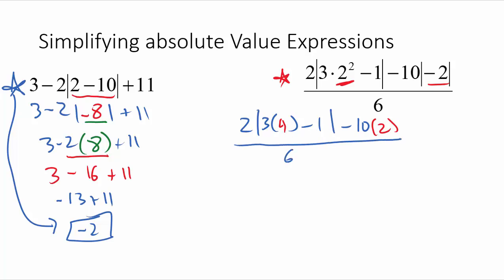Moving right along. The next thing we're going to want to do is probably multiply inside this absolute value here. So let's make this 3 times 4 a 12. So we've got 2 times the absolute value of 12 minus 1, close the absolute value. I'm going to evaluate this right now, too. This 10 minus 2 is just going to be equal to 20. So this will be a minus 20 up here, and that will all be divided by 6.